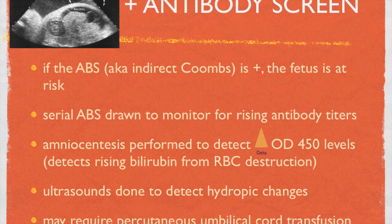If the antibody screen is positive related to RH, the fetus is at risk as already stated. We need to repeat serial antibody screens every four weeks to monitor for rising titers. If the titers are rising, the frequency of blood draws will be every one to two weeks depending on how quickly they're rising. If titers rise, the obstetrician will perform serial amniocentesis looking for detection of the Delta OD 450 levels, which indicates a rising bilirubin present in the amniotic fluid that represents red blood cell destruction.